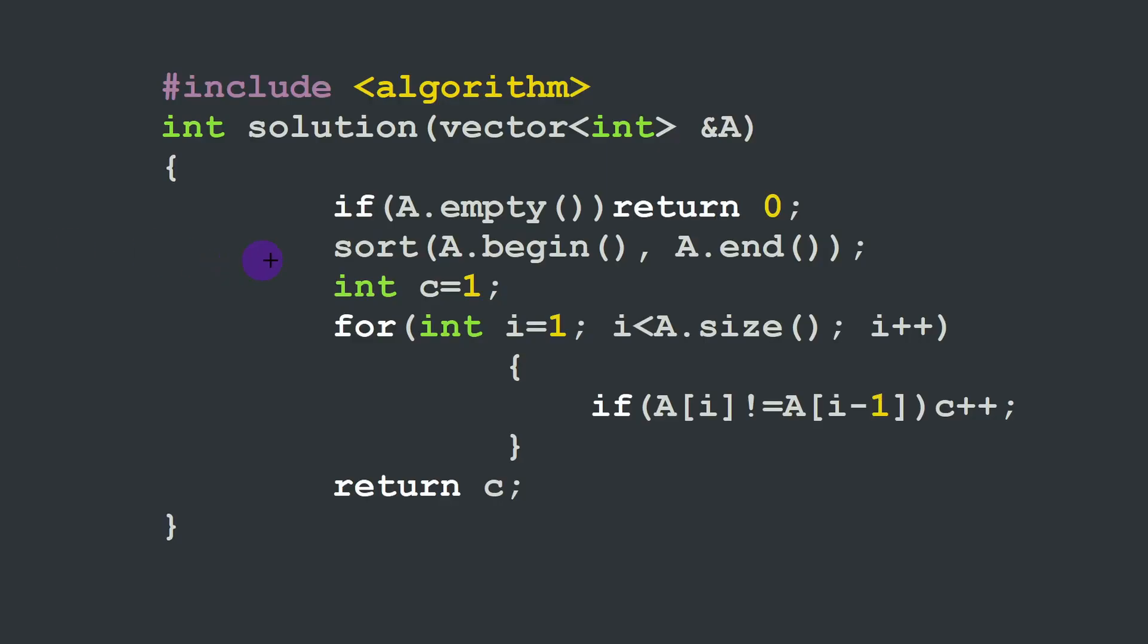So this is our solution function. It takes one parameter, the vector A. We start by testing if the vector is empty, and if it's the case we return 0 because we have no distinct values inside the array. Then we can use the sort function from the algorithm library that is included up here, and we are basically sorting our array in increasing order at this stage. Next we declare the distinct values counter integer C starting at 1 because we have now at least one distinct value, and we loop over the elements of the array to check if A[i] is different than A[i-1]. If it's the case we increment our counter by 1.